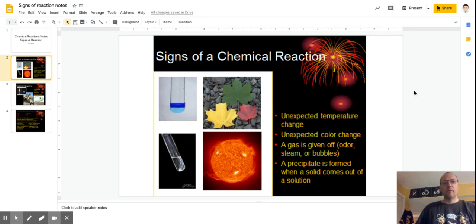There are four signs of a reaction. Unexpected temperature change. Unexpected color change. A gas is given off in the form of odor, steam, or bubbles. And a precipitate is formed, which means when a solid comes out of solution.